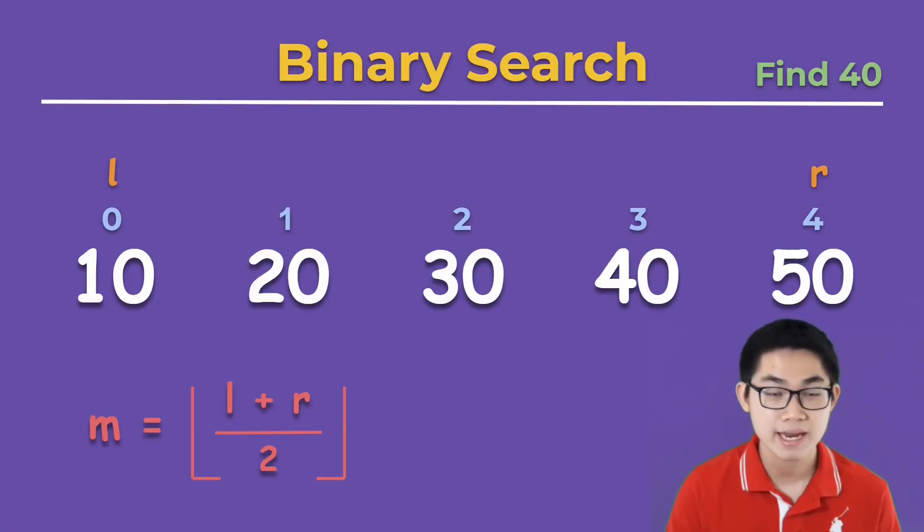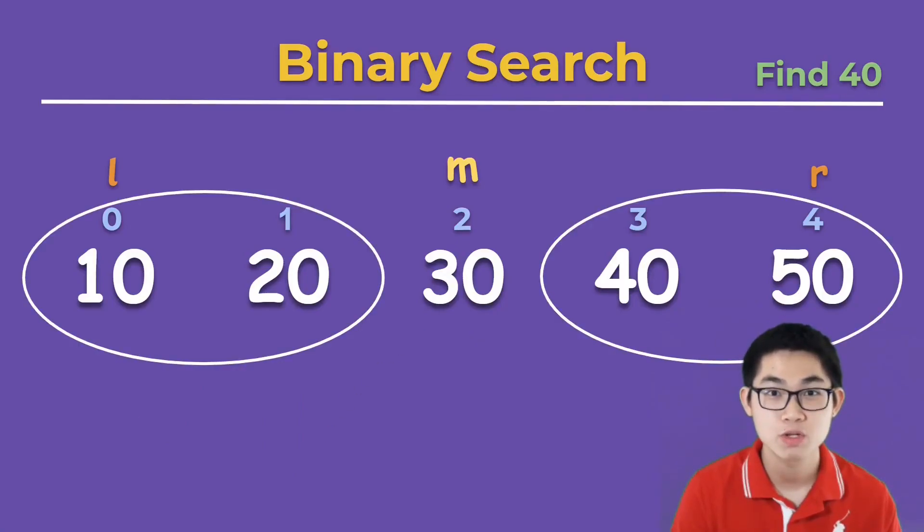So the formula for mid is L plus R divided by 2, and L is 0 at index 0. R is 4, and then we get 4 divided by 2 which gives you 2. So the mid is at index 2. We split the array into two groups.